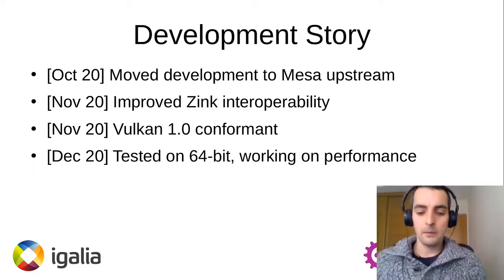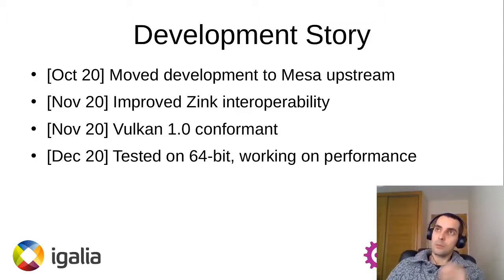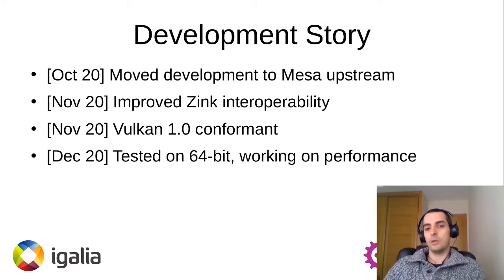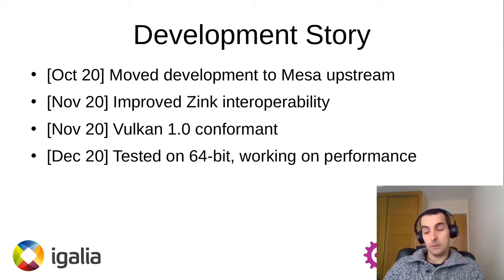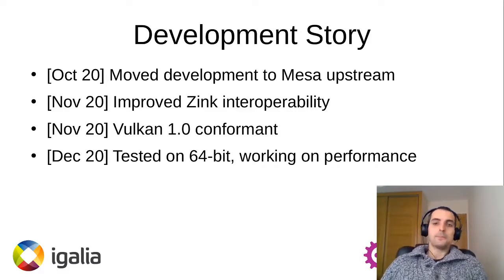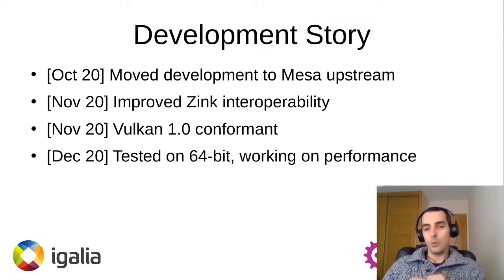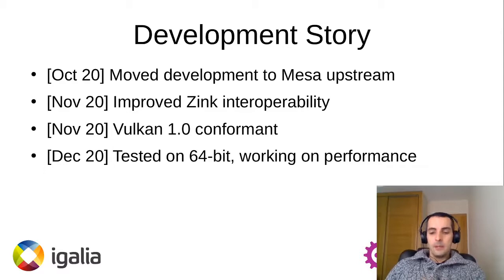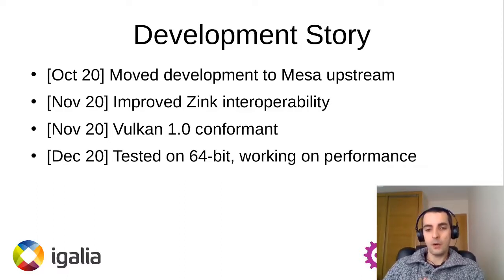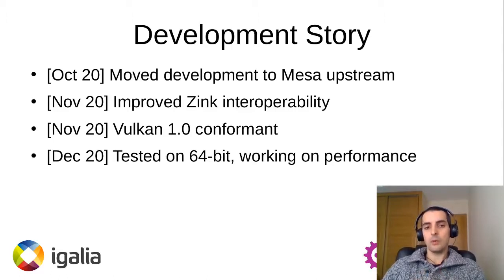By November, one of the issues we had was finding more Vulkan applications to test on the Raspberry Pi. So we worked on improving interoperability with ZINK — a framework that exposes OpenGL functionality but internally uses Vulkan — so we could test OpenGL applications using our Vulkan driver. Also by November, we got all our tests passing and submitted the driver for Khronos conformance. That means this driver is now officially Vulkan 1.0 conformant, and it's listed on the Khronos page of drivers that fulfill the Vulkan 1.0 API.